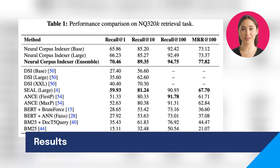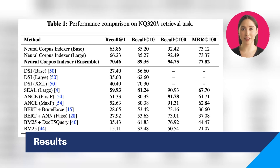Now let's talk about the results of the paper. The authors tested NCI on two commonly used academic benchmarks: the Natural Questions 320k dataset and the Trivia QA dataset. On the Natural Questions dataset, the NCI achieved a 17.6% relative enhancement for Recall@1 compared to the best baseline method. On the Trivia QA dataset, the NCI achieved a 16.8% relative enhancement for R-precision compared to the best baseline method. This is very impressive and shows that the NCI is a powerful document retrieval tool. It also shows that techniques such as query generation and semantic document IDs are very effective in improving the performance of the model.